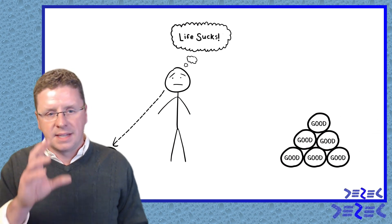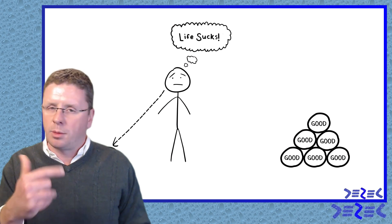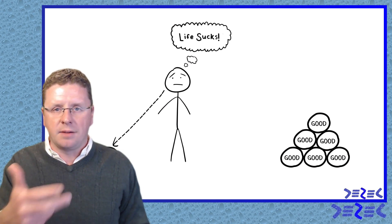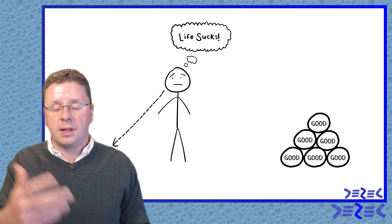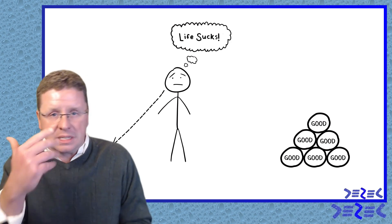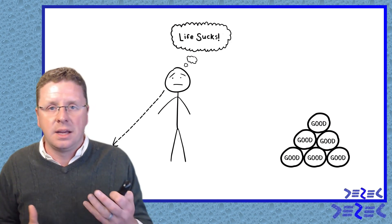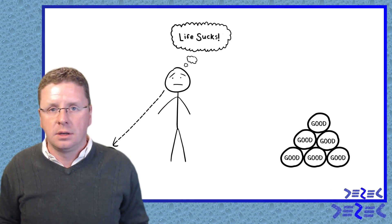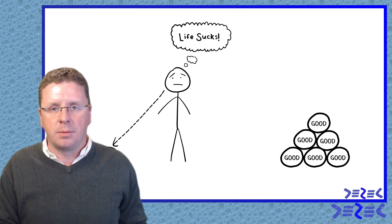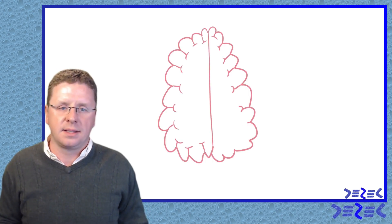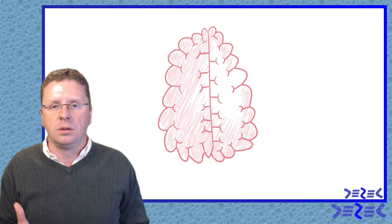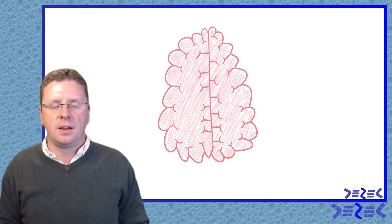This negativity bias we inherited from our ancestors. Our ancestors got ahead by avoiding threats. If you miss an opportunity, that's no big deal. They could focus all their attention on avoiding threats because those are the people that survive to become your ancestors. Author Rick Hansen says that our brain is like velcro for negative experiences.